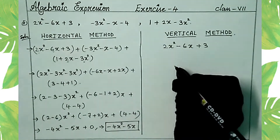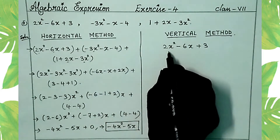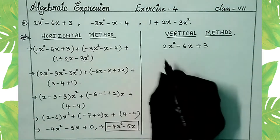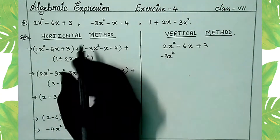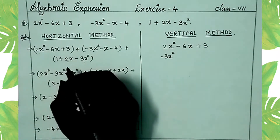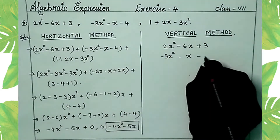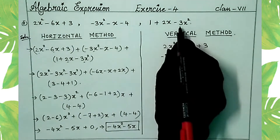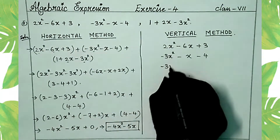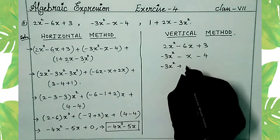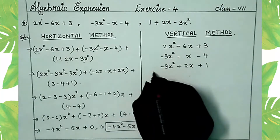We write the next expressions below in such a way that like terms are one below the other. Under 2x² we write minus 3x², under minus 6x we write minus x, and minus 4 as the constant. From the third expression: minus 3x² below, then plus 2x, then plus 1.